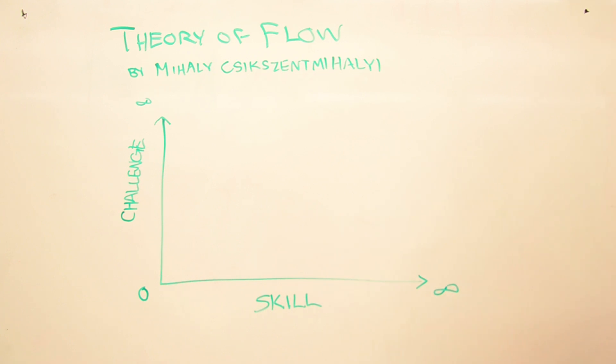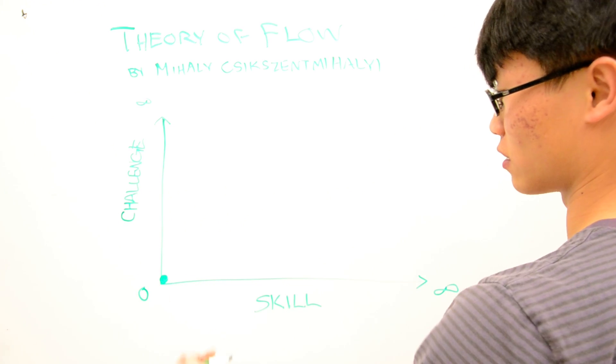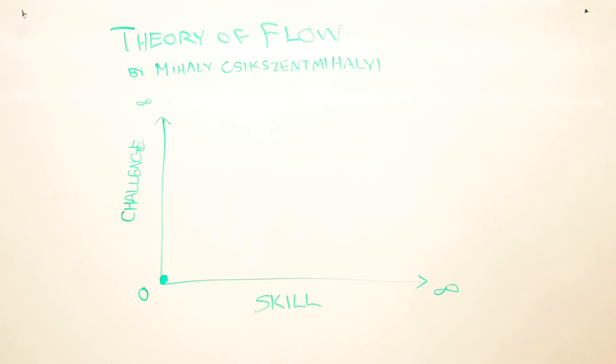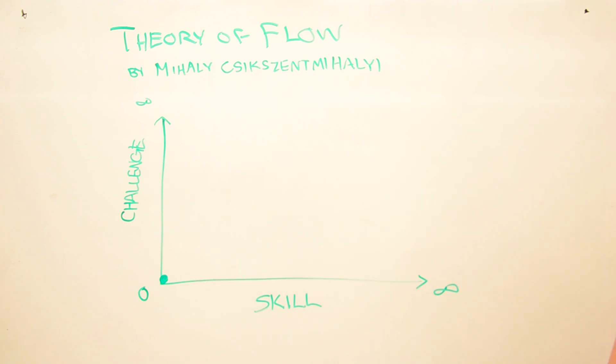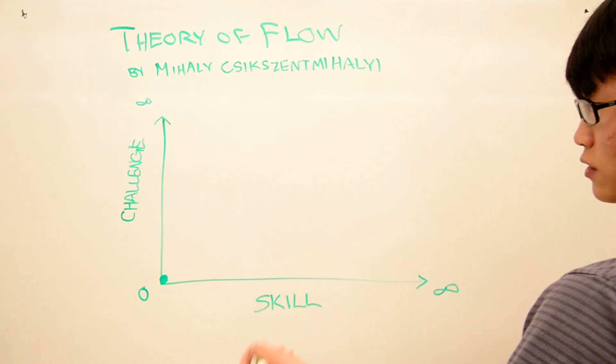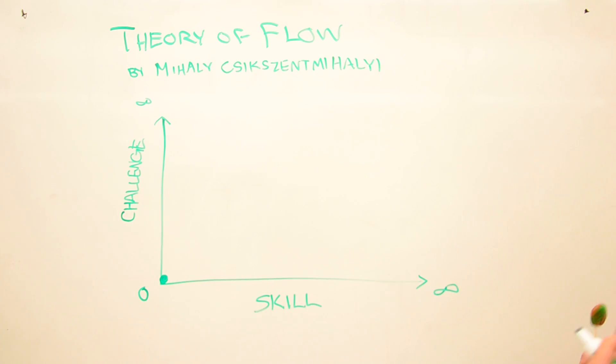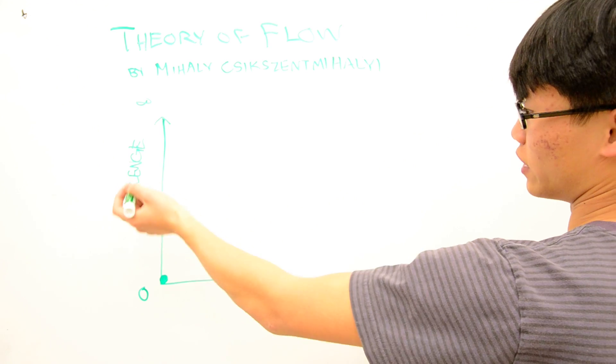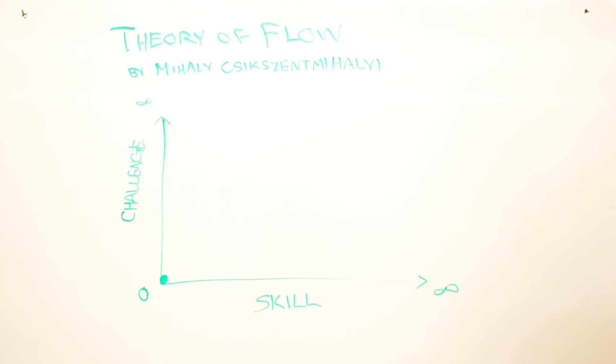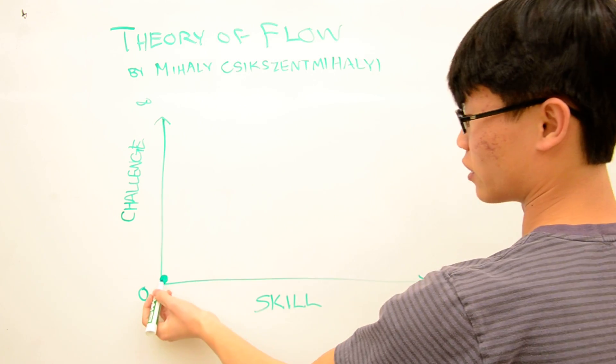Just to start understanding how this graph works. Here, this is basically anyone who's just starting a new activity. If we make the simple example of sports, you have something like tennis, you've never played before. You just go out there with your buddy who also hasn't played before. You guys both have practically zero skill, and the challenge is zero because you guys are playing each other. No competition whatsoever. So you start here.